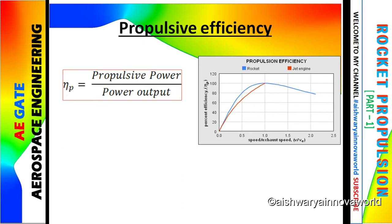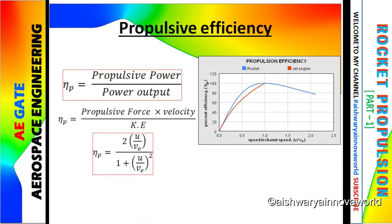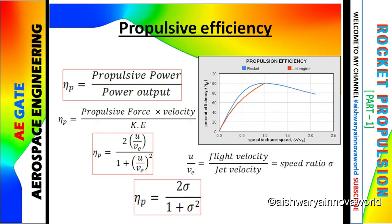Now I will come to propulsive efficiency. You have to memorize this definition. It is the ratio between the propulsive power by power output. Propulsive power is force into velocity or thrust into velocity and power output means kinetic energy. From here you can write eta p equals to 2 times u by ve divided by 1 plus u by ve whole square. Now I will tell you another ratio, the speed ratio, which is flight velocity by jet velocity, u by ve. In place of u by ve we substitute sigma, the speed ratio. So we get eta p equals to twice of sigma by 1 plus sigma squared.